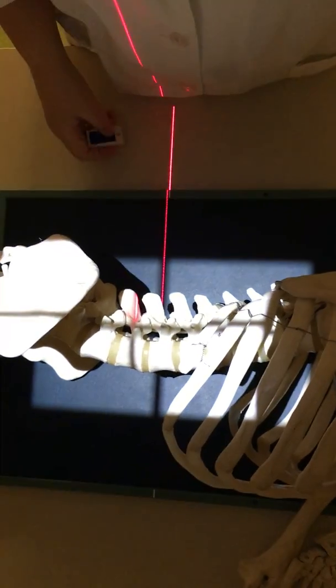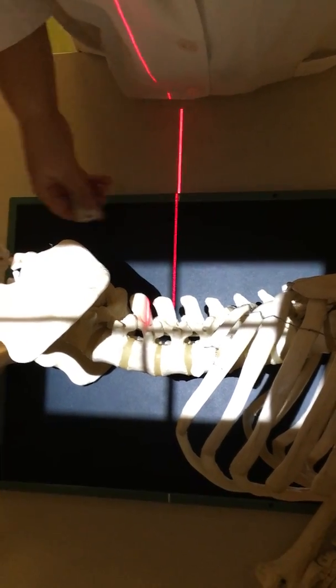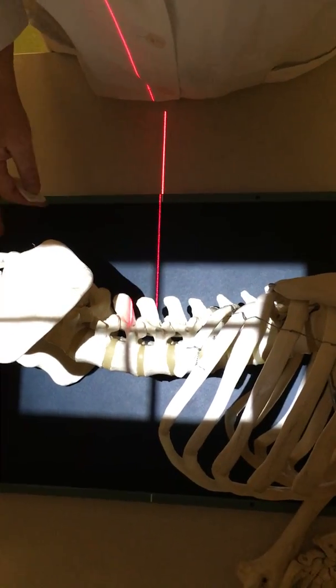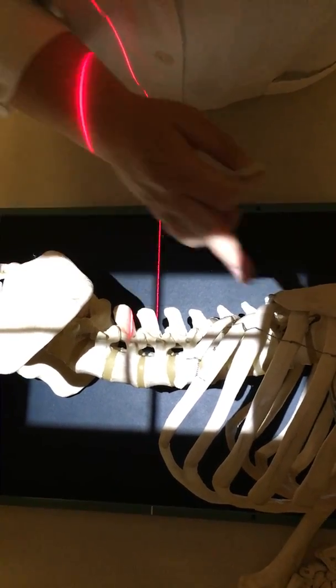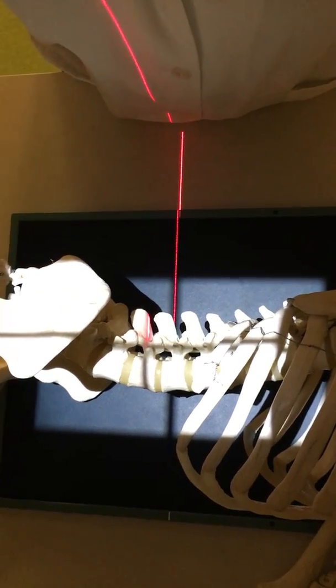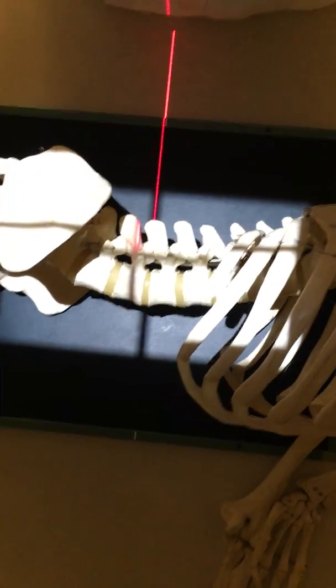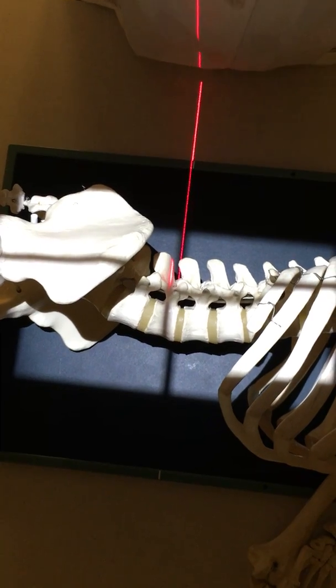When performing a lateral lumbar spine, again you will be using a 14x17 lengthwise or portrait, but your collimation will be 14 inches long by 8 inches wide, which is the exact same collimation that you use for your AP.